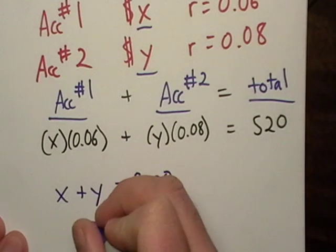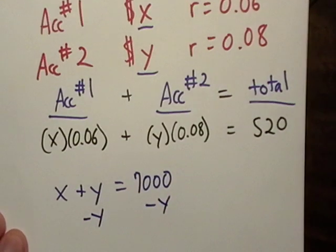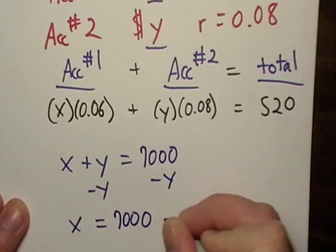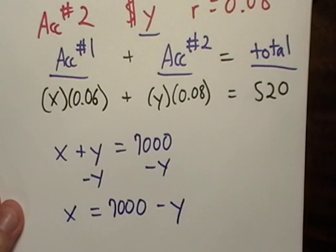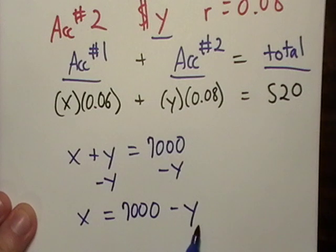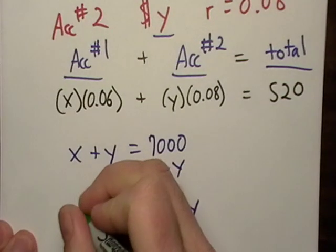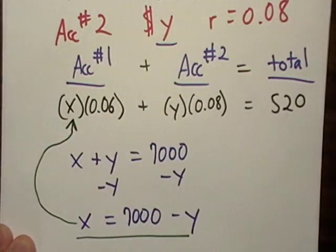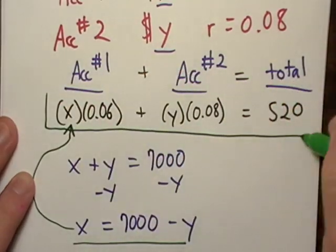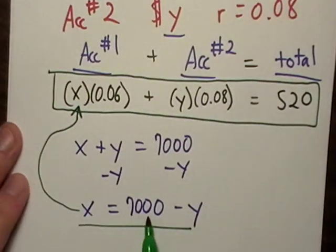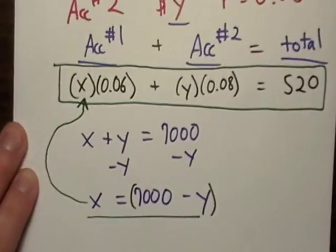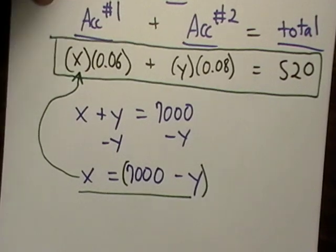Now what I'm going to do next is I'm going to subtract Y from both sides. I'm going to subtract Y from both sides, and that's going to give me X equals $7,000 minus Y. So now X equals $7,000 minus Y. So it looks like I can take this X right here, this whole thing, and I can go ahead and plug it into my X up here in my equation. See, here's my actual equation that's going to figure everything out. So I'm going to take this value and I'm just going to plug it in up here. So let me go ahead and do that. So I'm going to take 7,000 minus Y.